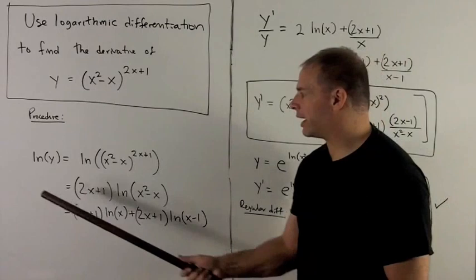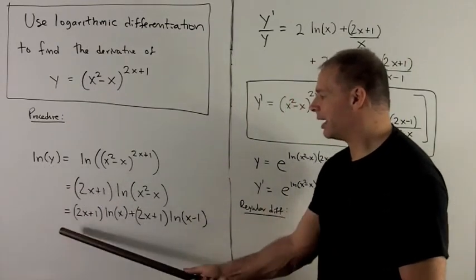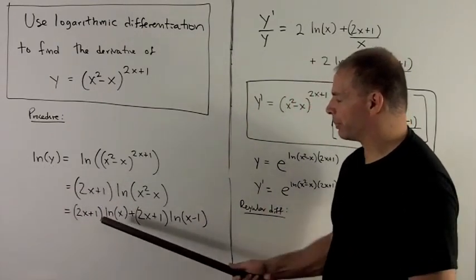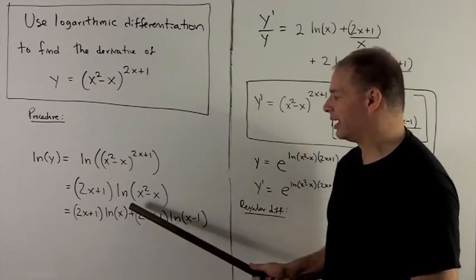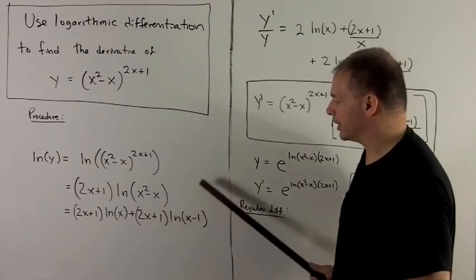So I've rewritten my natural log of y as something that's really just a bunch of 2x plus 1s, that's easy to differentiate, and natural logs, which are also easy to differentiate.